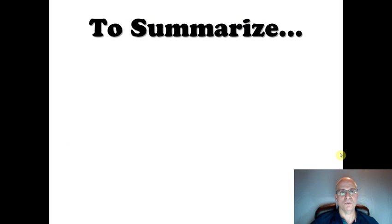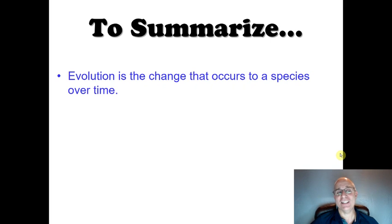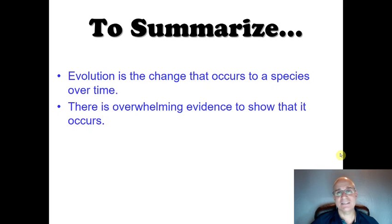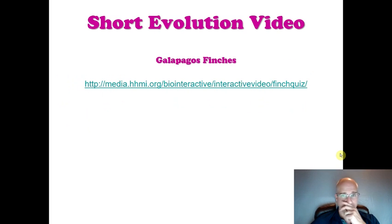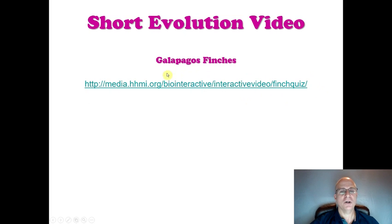To summarize: evolution is the change that occurs in a species over time, and there's lots of evidence to show that this occurs. Make sure you know those four examples, because if this is not an essay question, there will almost certainly be multiple choice and fill-in-the-blank questions on this material. There's also a short video about the evolution of finches on the Galapagos Islands that's really interesting, though it's not included here.